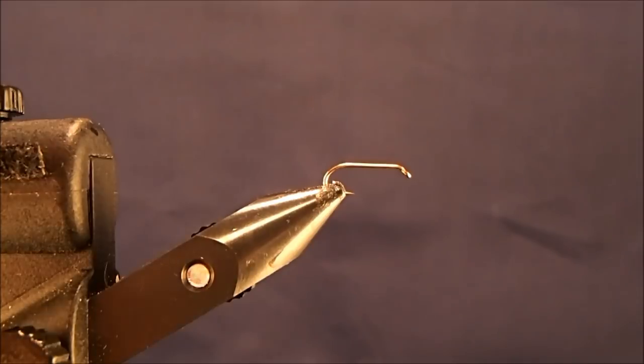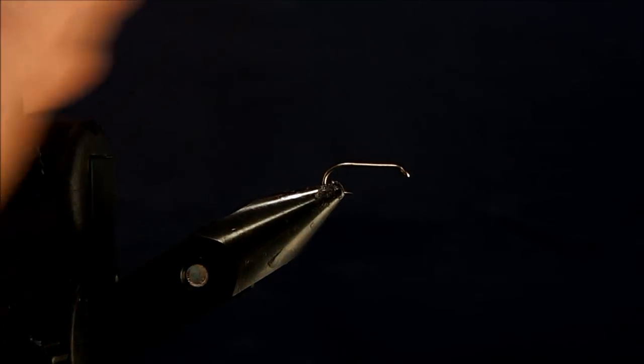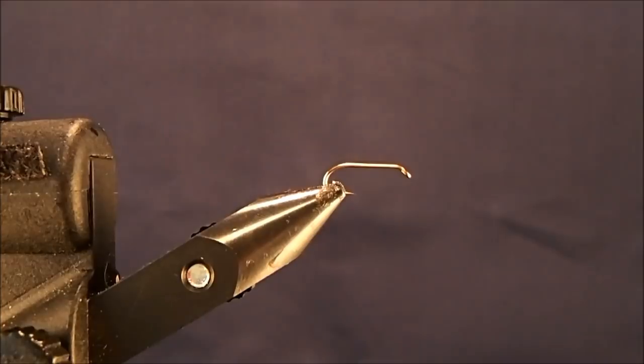Extremely easy fly to tie. I'm going to start off with a size 14 wet fly hook. I usually tie these pretty small, just tying it in a 14 today so it shows up on camera, but usually I'll get these down to 18s and 20s.